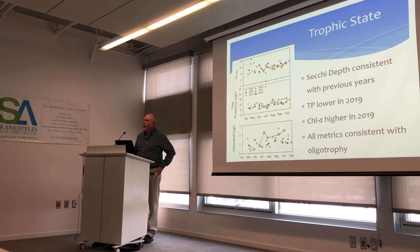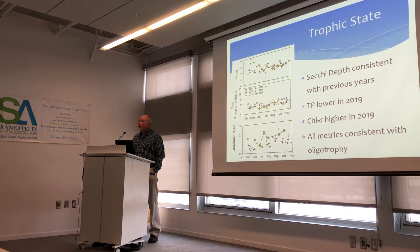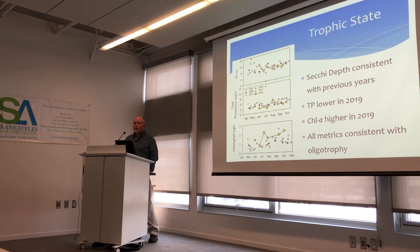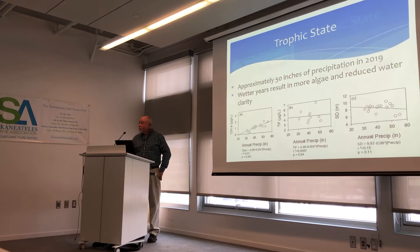This plot shows some temporal and seasonal trends for the six years that we monitored the lake. Secchi disk is in the upper plot, total phosphorus in the middle, and chlorophyll A concentrations on the bottom. In general, we've seen pretty consistent Secchi measurements over time. Phosphorus varies a little year to year — 2019 concentrations were on the low side — and chlorophyll concentrations have increased in both 2017 and 2019. However, all of these metrics are consistent with an oligotrophic trophic state, and that has not changed.